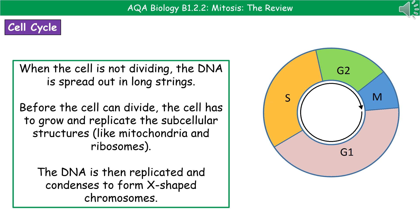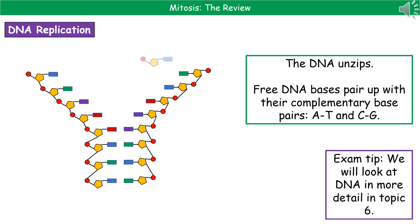Once that's done, the DNA has to be replicated and it condenses to form the X-shaped chromosomes that we're familiar with. Just so we don't leave DNA replication unexplained, we're jumping ahead to a little bit of work we'll see in more detail in topic six, which is the structure of DNA.